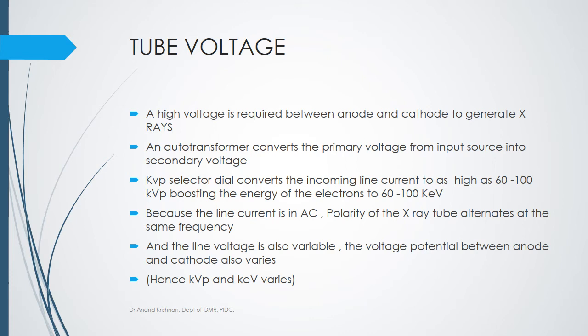A high voltage is required between anode and cathode because the electron has to travel from cathode to anode and strike it with enough force to produce x-rays. The auto transformer converts primary voltage to secondary voltage. The kVp dial selector converts incoming line current to as high as 60 to 100 kVp, boosting the energy of electrons. In summary, mA decides how many electrons are produced, and kVp determines the energy/intensity of those electrons.